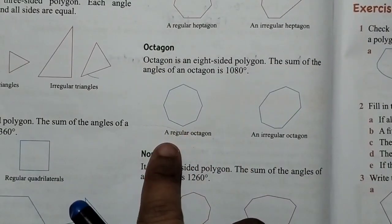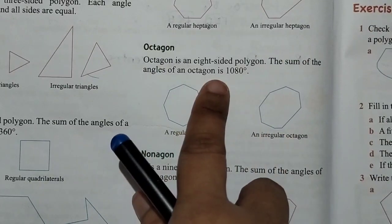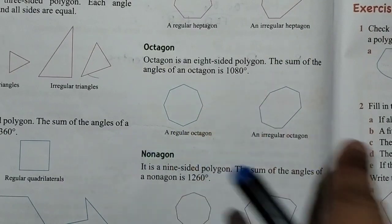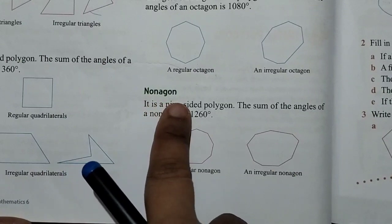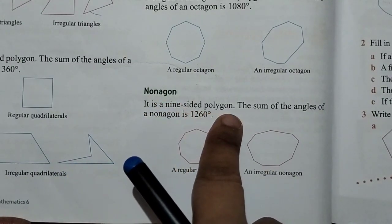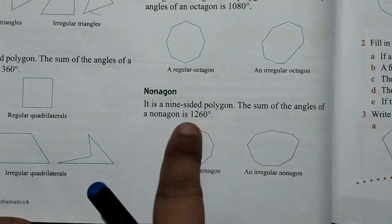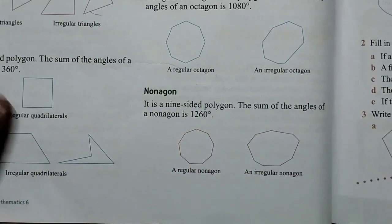This is the regular and this is the irregular. The sum of the angles is 1080 degrees. It is 9-sided polygon and the sum of the angles is 1260 degrees.